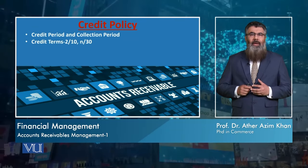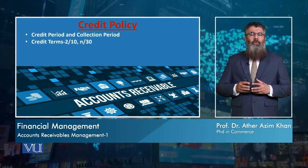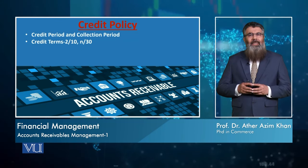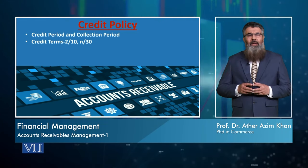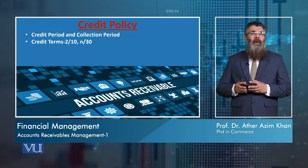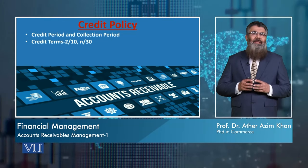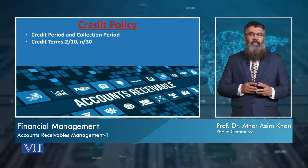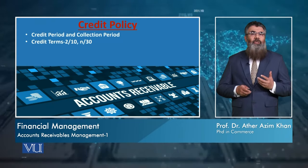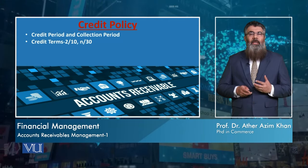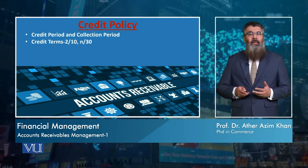Another important element of credit policy is called the credit term. In credit terms, we include two or three things. We talk about the net period of payment. For example, credit terms 2/10, N/30 — N/30 means that the net period of payment is 30 days, so the customer must pay within 30 days. But if the customer makes a payment within 10 days, he or she will get a 2% discount. The total period is 30 days.